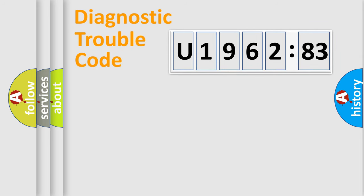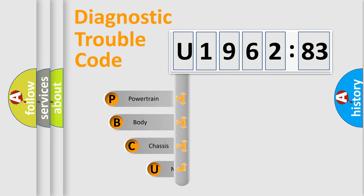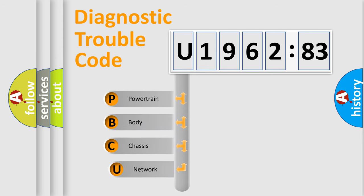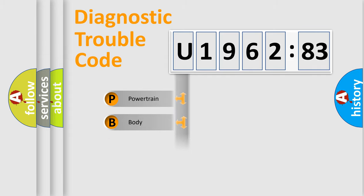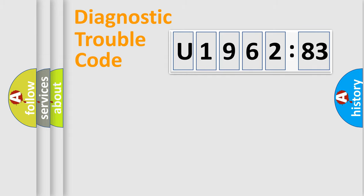Let's look at the history of diagnostic fault code composition according to the OBD2 protocol, which is unified for all automakers since 2000. We divide the electric system of an automobile into four basic units: Powertrain, Body, Chassis, and Network.